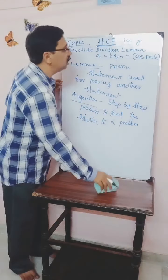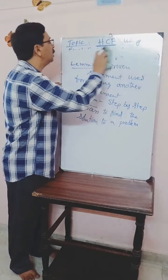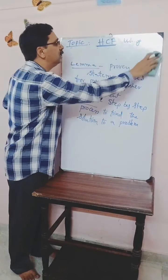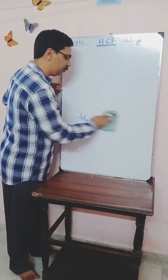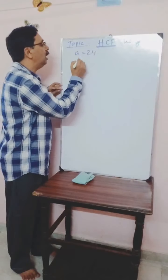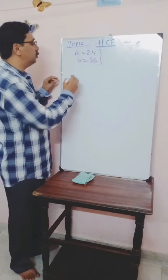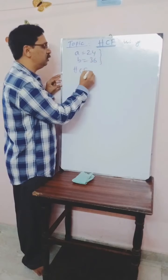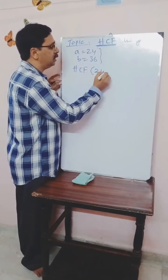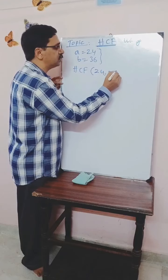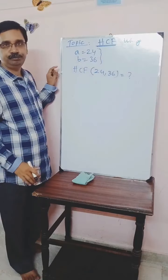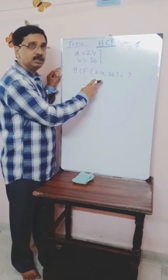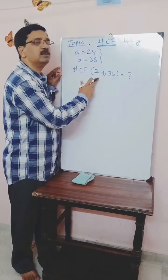Let us take 24 and 36. Here A is 24 and B is 36. We are going to find the HCF of 24 and 36. So HCF of these two numbers is denoted as HCF(24, 36) — equal to how much? This is the question. We express 36 in terms of 24 first.